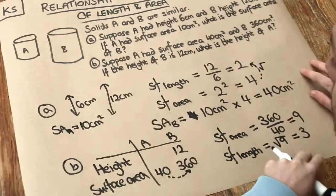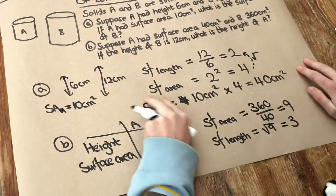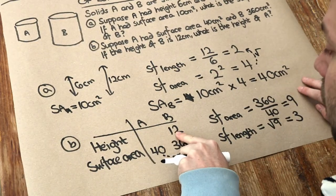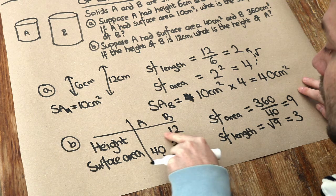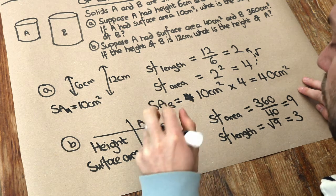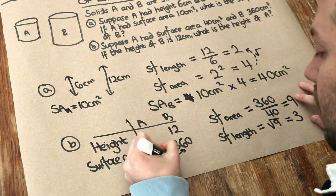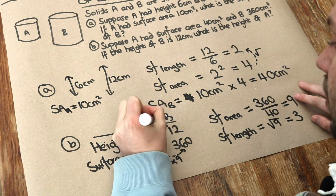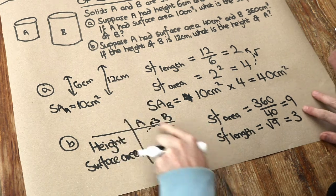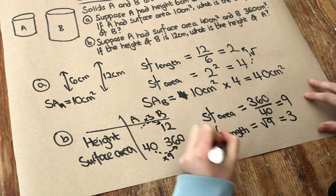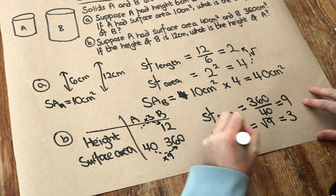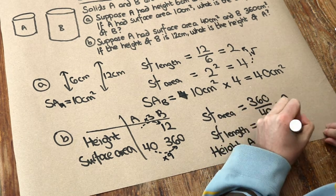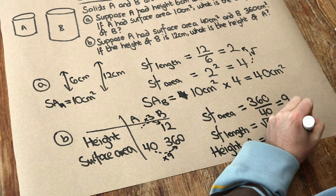So that means all the lengths going from A to B are 3 times bigger. If the height of B is 12, then the height of A must be 3 times smaller — because the scale factor of length is times 3. So we just need to do 12 divided by 3. The height of A is 12 divided by 3, which is 4 centimeters.